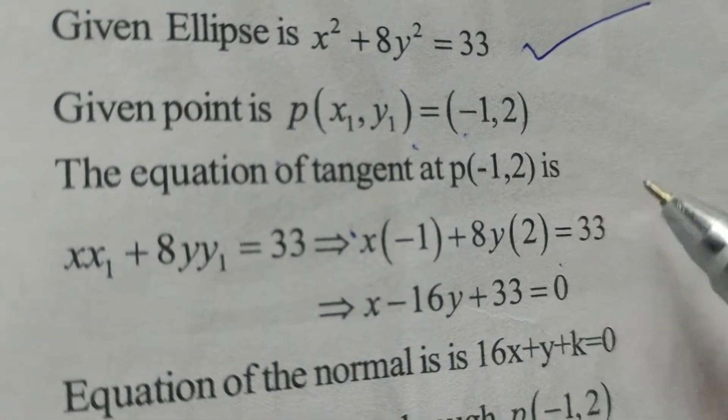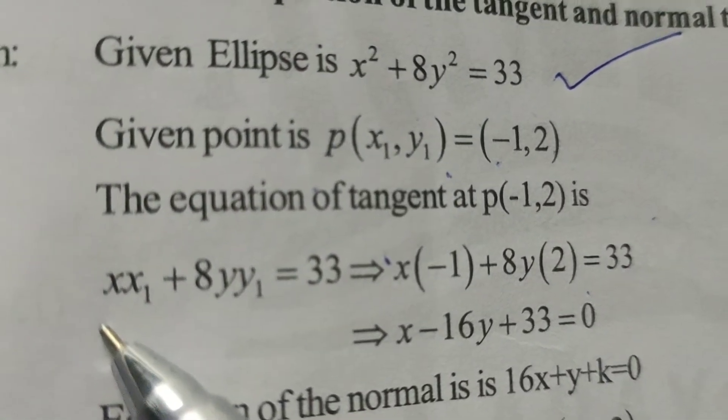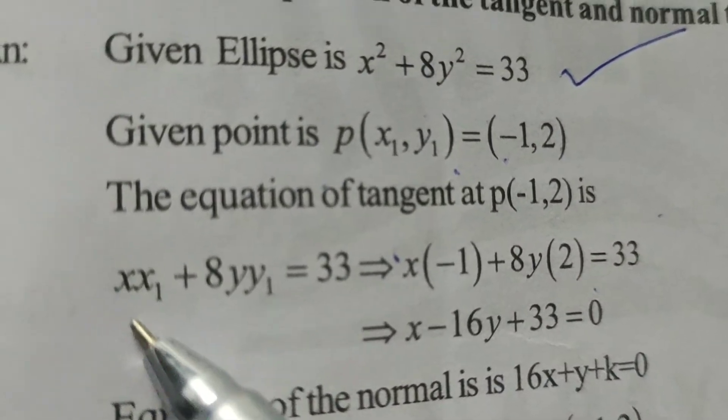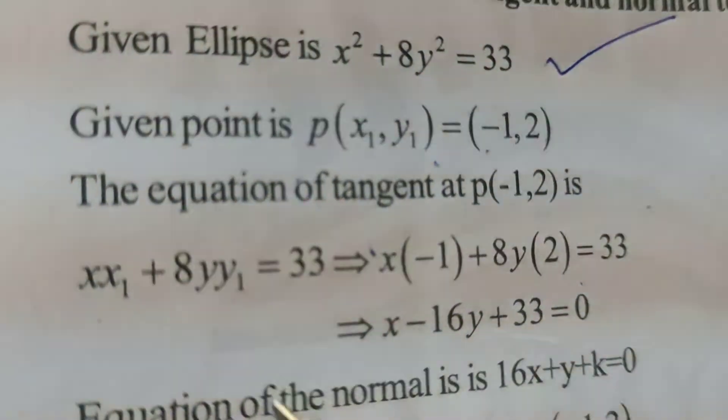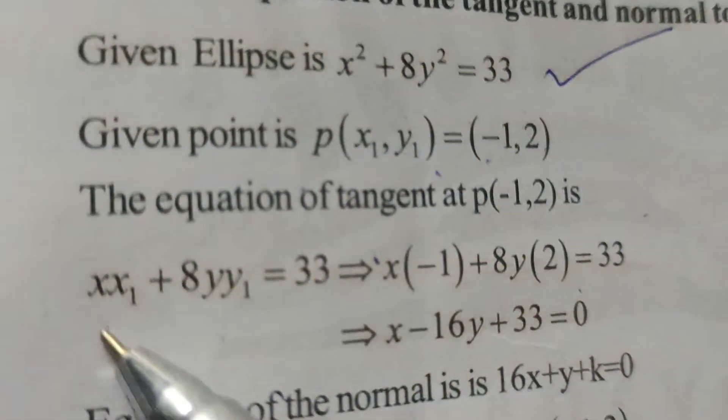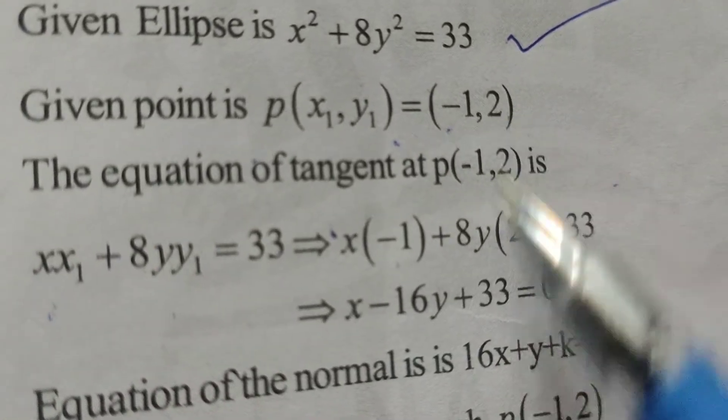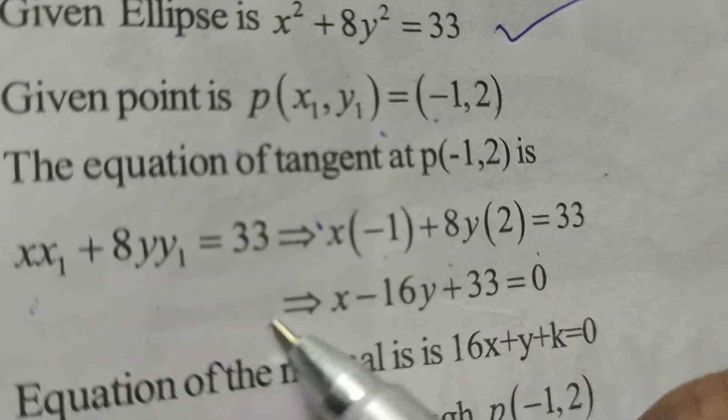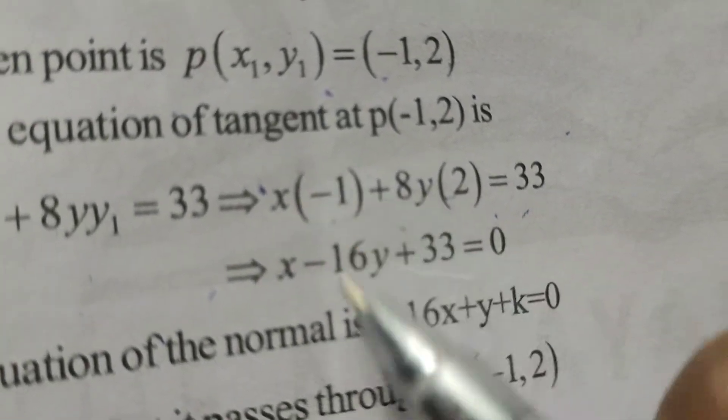can be written using the formula xx₁ + 8yy₁ = 33. Therefore, substitute x₁ = -1 and y₁ = 2, which gives x(-1) + 8y(2) = 33. Therefore,